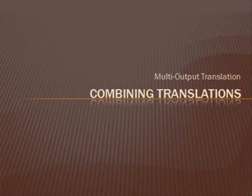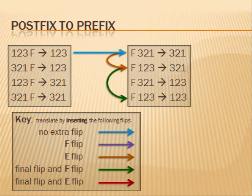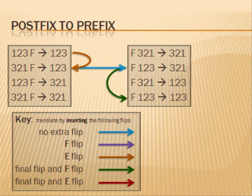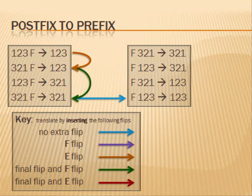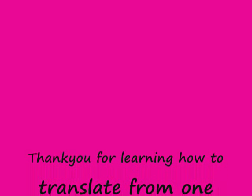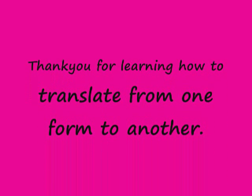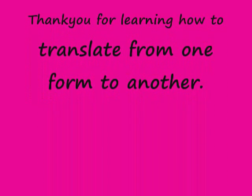All the kinds of multi-output translations that we have learned will be shown. Combining translations: we must combine three kinds of translations to get from postfix to prefix or back. There are six total combinations of ways to do this. Thank you for learning how to translate from one form to another.